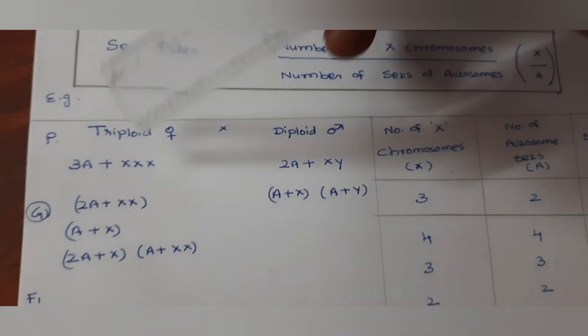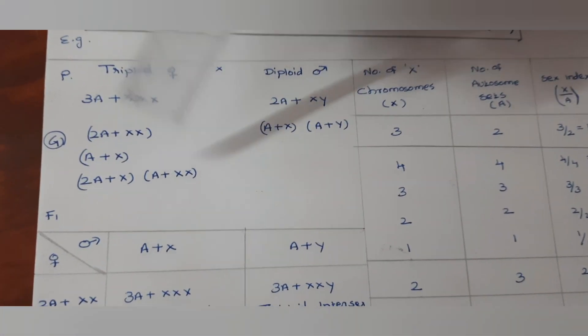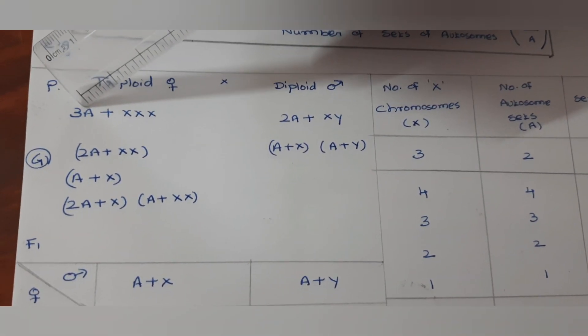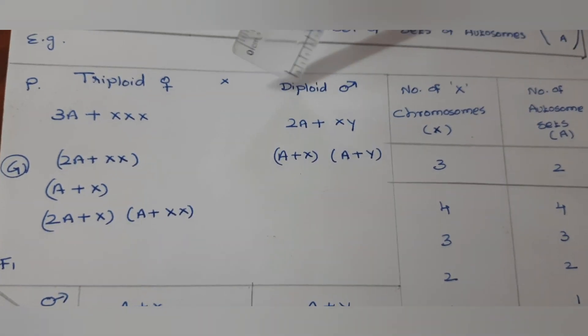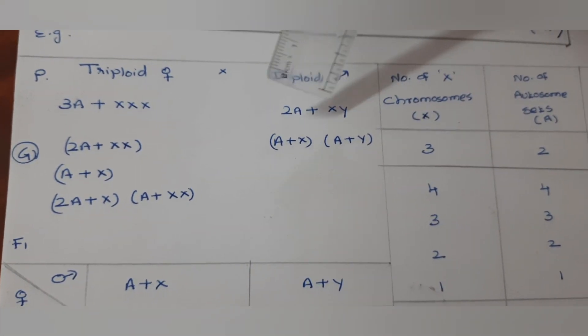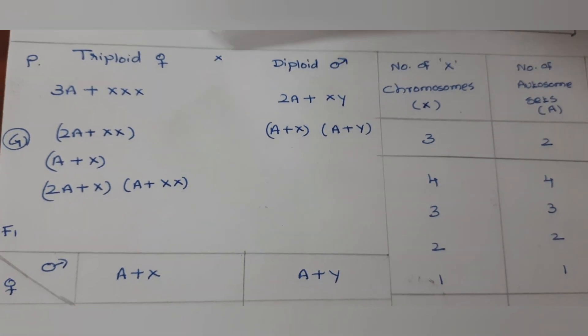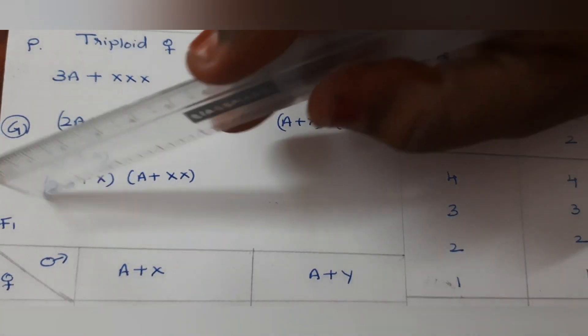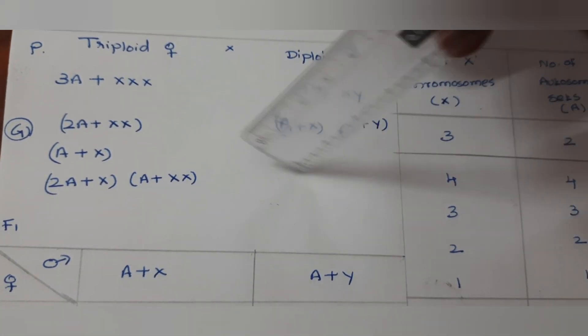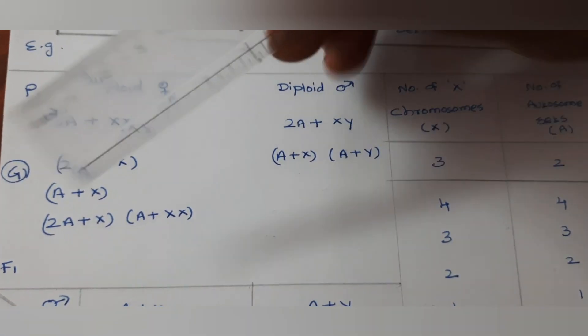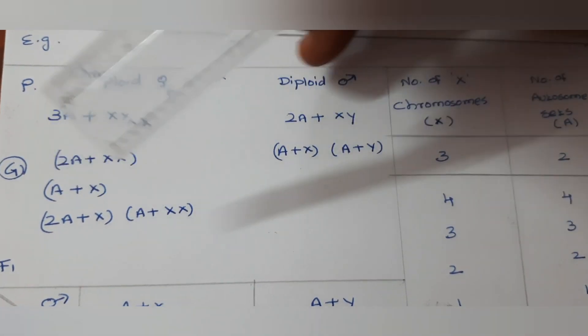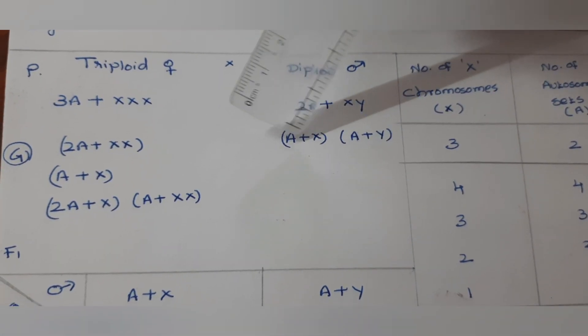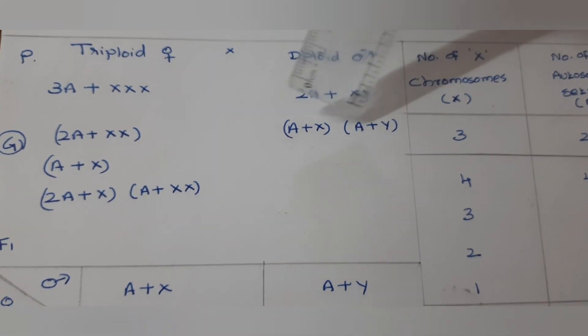Now let us see the example here. In Drosophila, this is triploid female, that means 3X chromosomes and three sets of autosomes (3A+XXX). Diploid male: 2A+XY. When you cross the triploid female and diploid male, the following gametes are produced during maturity time. 2A+XX, A+X, 2A+X, A+X from the female. Here 2A+XY, the gametes are A+X and A+Y. There are two gametes possible, either X or Y.